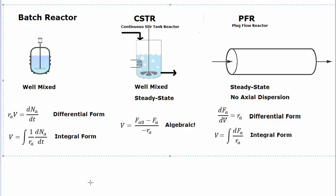Now we have the design equations for everything—here's our summary. For the batch reactor, it has a differential form and an integral form; the assumption used was that it was well-mixed, giving a design equation relating volume to reaction rate and moles in the system. For the CSTR, the assumptions were well-mixed and steady state, giving an algebraic design equation relating volume to moles and reaction rate. For the plug flow reactor, the assumptions were steady state and no axial dispersion—we couldn't say it was well-mixed—giving a differential and integral form again relating volume to moles and reaction rate. Next time we'll look at conversion.